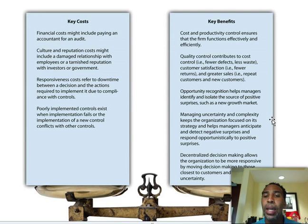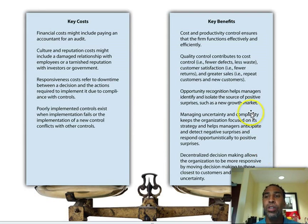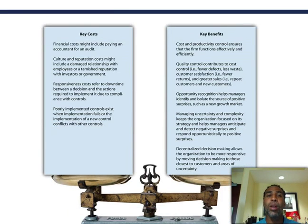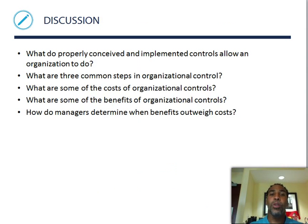Managing uncertainty and complexity keeps the organization focused on its strategy, helps managers anticipate and detect negative surprises, and respond opportunistically to positive surprises. Decentralized decision-making allows the organization to be more responsive by moving decision-making to those closest to the customers in areas of uncertainty. Some businesses make all decisions in one centralized unit; others distribute them regionally — east, south, midwest, and west.